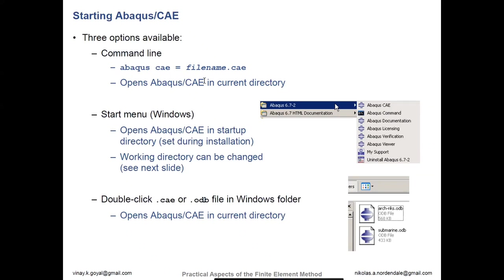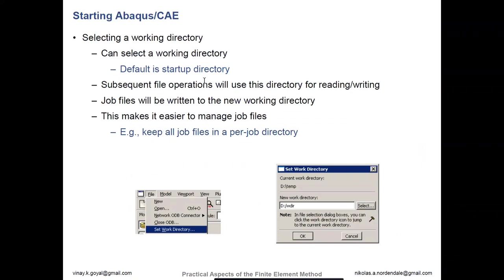If you want to select a certain working directory, you can go to File and then Set Work Directory. The default is the startup directory, and you can choose that depending on whether you want to save in a specific folder. If you're using a flash drive on your personal computer, you can choose to save there if you're trying to move files around. This is really important for managing your files.